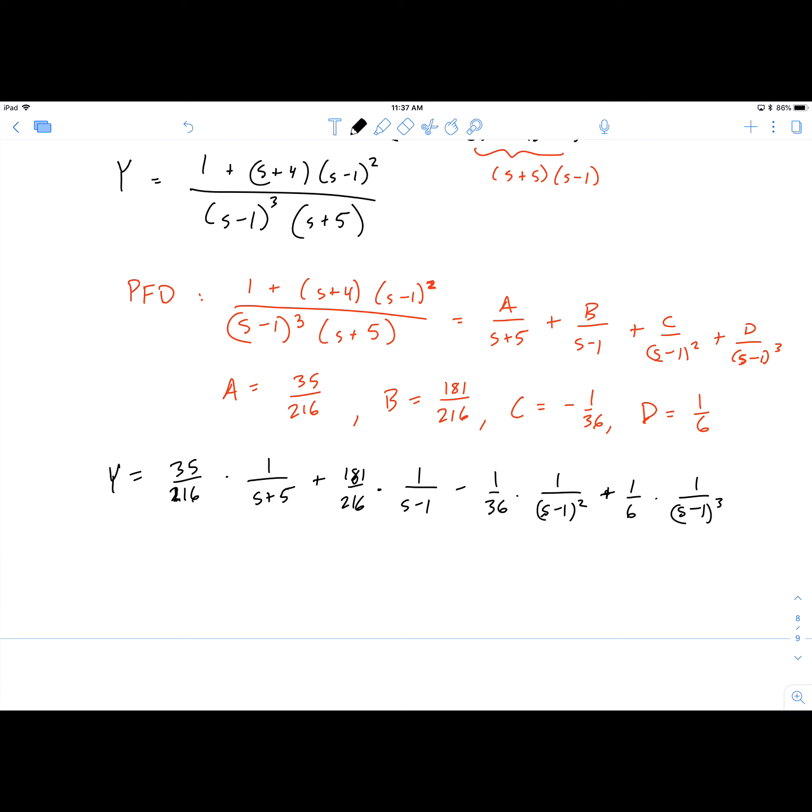Now most of these, if we want to take the inverse Laplace transform to get y(t), little y(t), most of them are already set up for us. So this one here, for instance, the 1/(s+5), is immediately going to revert back to e^(-5t). This will be e^(t). This one here, we did a minute ago, when we took the Laplace transform of te^t, that's exactly what we got. So the inverse Laplace transform of that will be te^t.